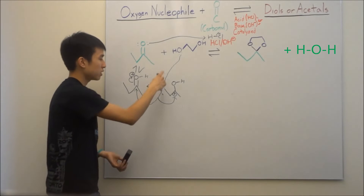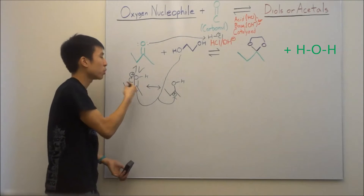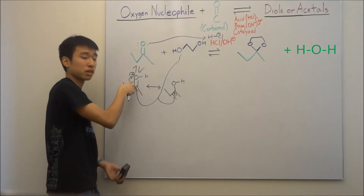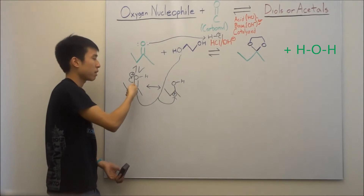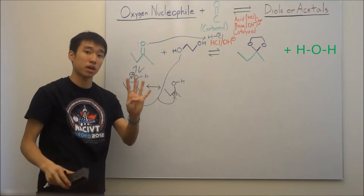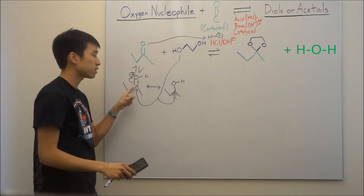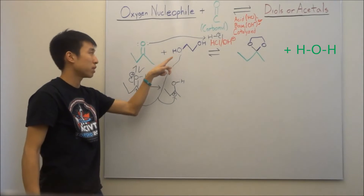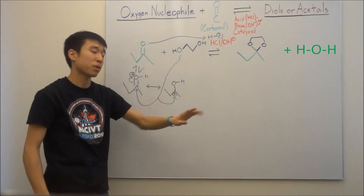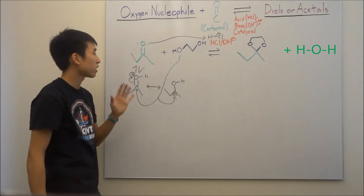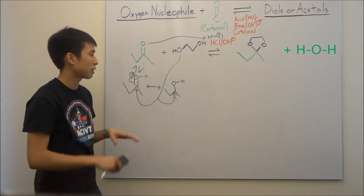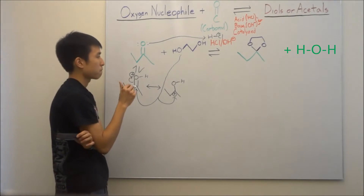Once the diol oxygen attacks this carbon, it's motivating the bonds in the carbonyl to move up. Because carbon only wants four bonds — right now it has four, but it's getting a fifth bond from the incoming oxygen. So it has to kick a bond away, and it's this bond right here, because kicking it away perfectly stabilizes the oxygen up here.